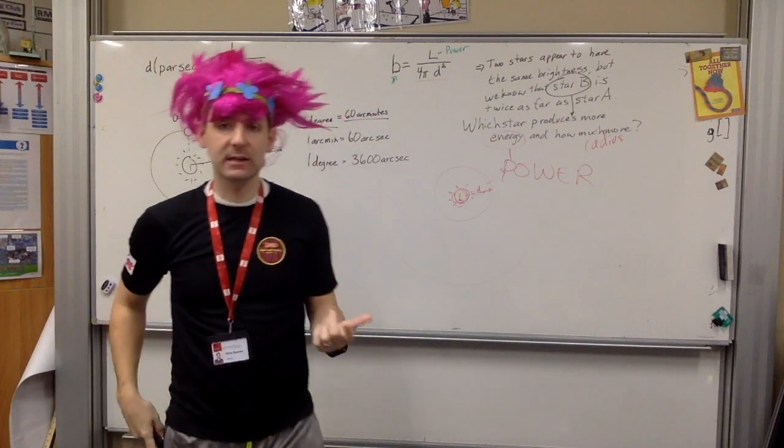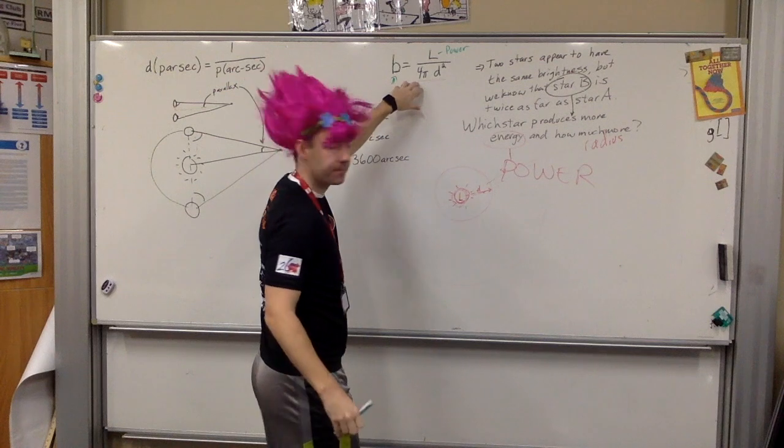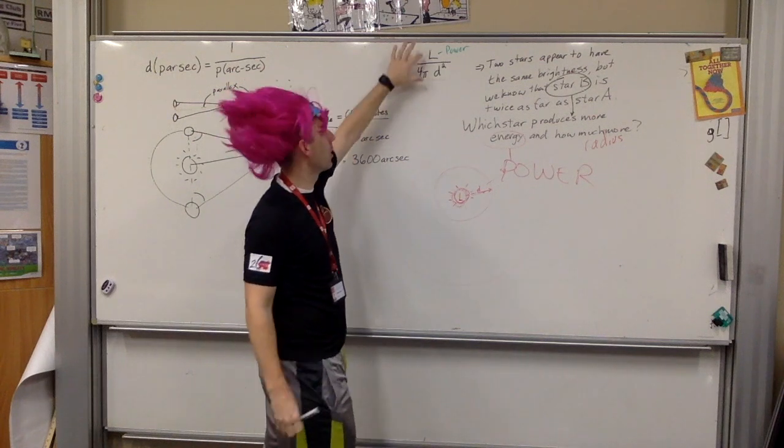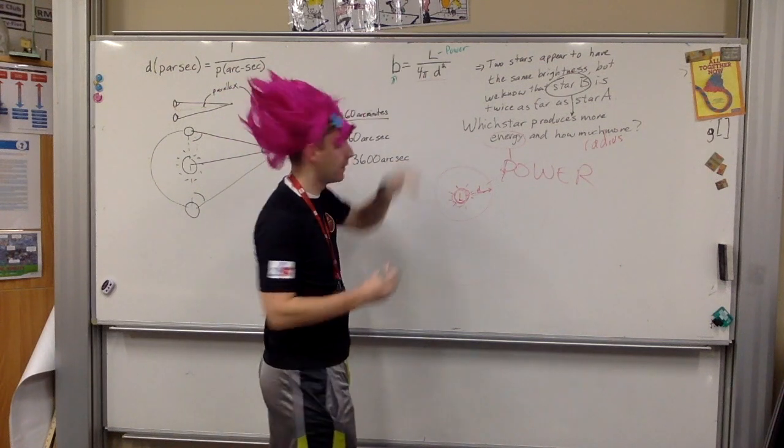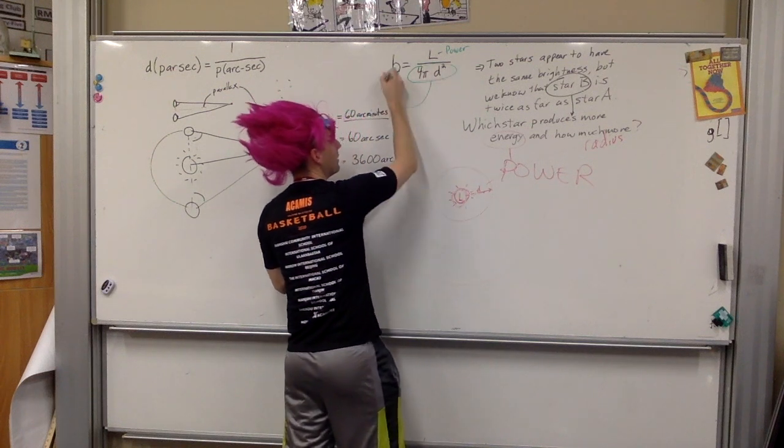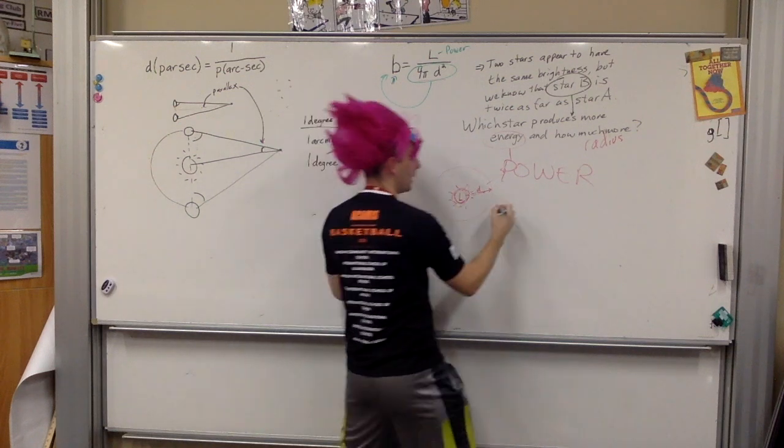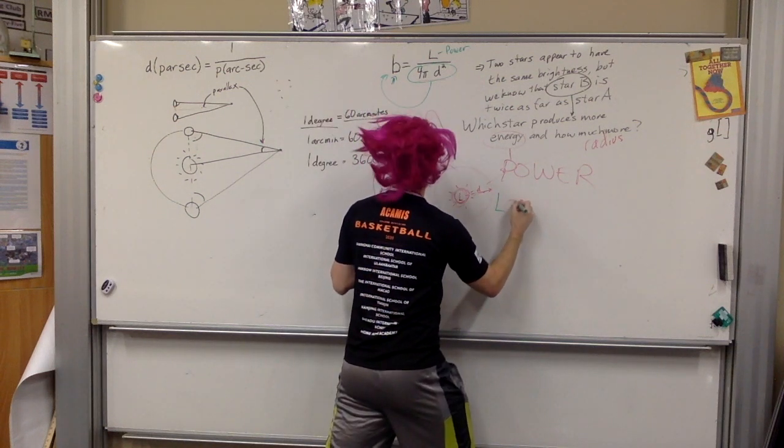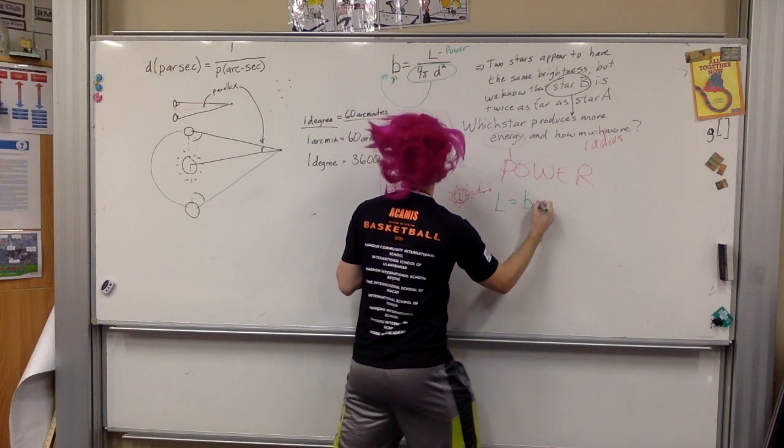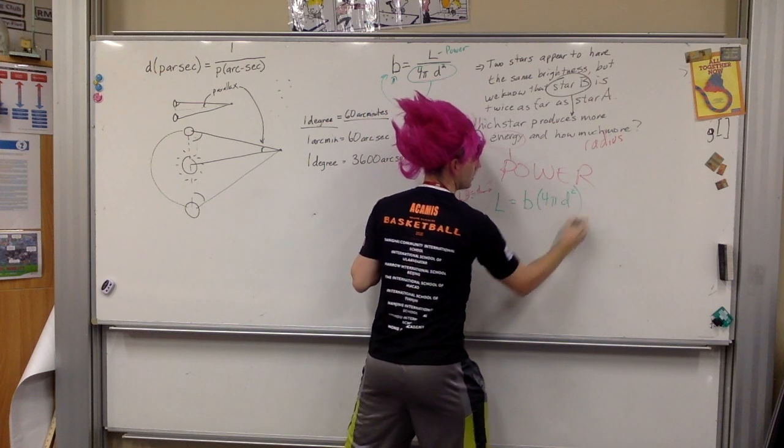We want to find the energy which is going to be related to the power. So, knowing that it's related to the power, let's use our equation here. We're going to solve for power, get power by itself. I'm going to take this 4 pi d squared, and I'm going to move it to the other side of the equation. I'm going to multiply both sides by that. So, what I'm going to have is L equals the apparent brightness times 4 pi d squared.